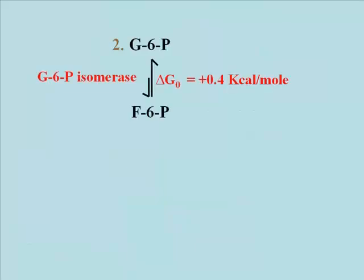Here's the rest of stage 1 of glycolysis. In this reaction, catalyzed by glucose 6-phosphate isomerase, the glucose 6-phosphate is converted to fructose 6-phosphate. Remember that glucose and fructose have the same molecular formula, so by definition they are isomers.